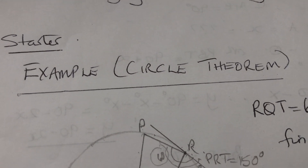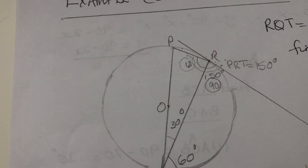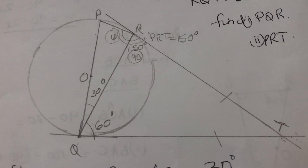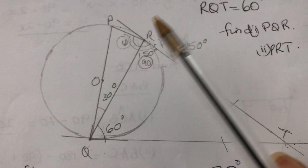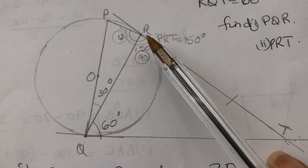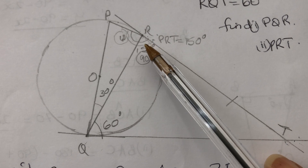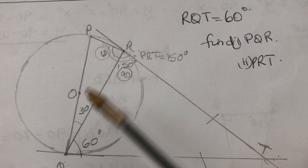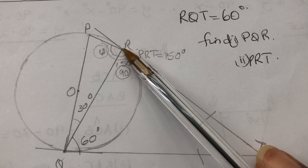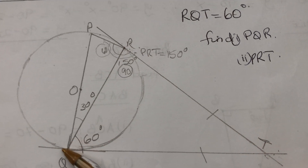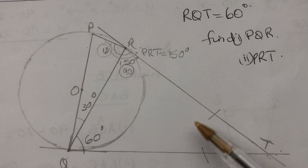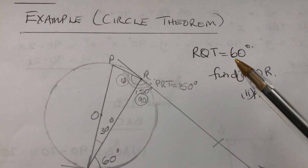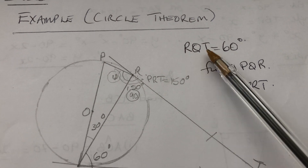Today we are doing circles, so I've brought a question on circle theory. I think we have eight or nine theorems — I don't focus on the count — but the more you solve questions the easier it is to apply them. For example, if that is a tangent and that is a tangent, they have equal length. Let's see what the question says.